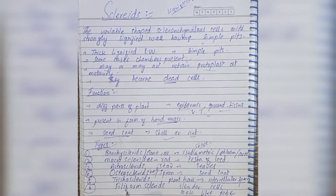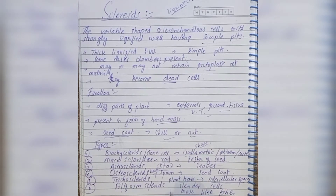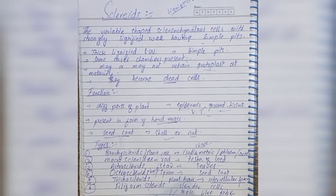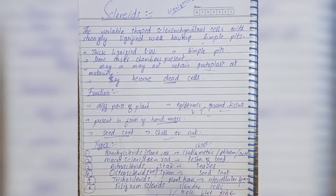The other type is filiform sclereids. Filiform sclereids are called slender cells. This is a fiber which has a pointed end — long fiber which is filiform in shape.